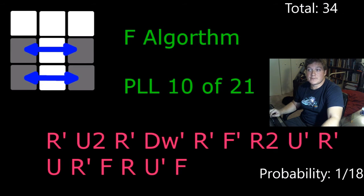F algorithm, same thing. Four ways this could happen rotationally. 34 total cases.